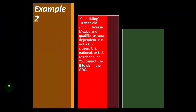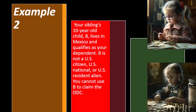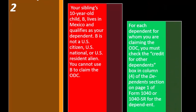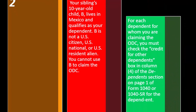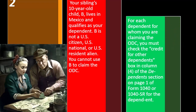Example two: your sibling's 10-year-old child B lives in Mexico and qualifies as your dependent. B is not a U.S. citizen, U.S. national, or U.S. resident alien. You cannot use B to claim the ODC other dependent credit. For each dependent for whom you are claiming the ODC, you must check the 'credit for other dependents' box in column four of the dependents section on page one of Form 1040 or Form 1040-SR.